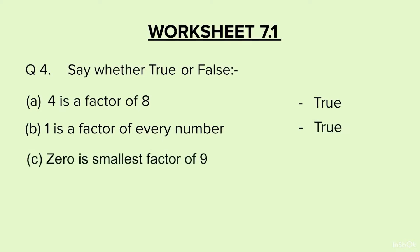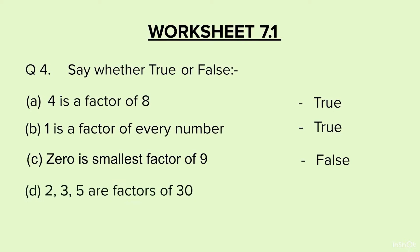C: 0 is the smallest factor of 9 — No, the smallest factor is 1. 0 is not the smallest factor, so this is False. D: 2, 3, and 5 are factors of 30 — we divide 30 by 2, get 0 remainder; divide by 3, get 0 remainder; divide by 5, get 0 remainder. So 2, 3 and 5 are all factors of 30. Hence True.